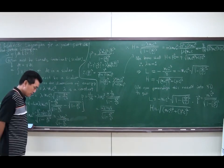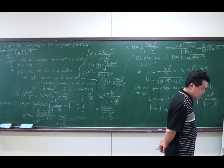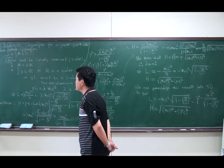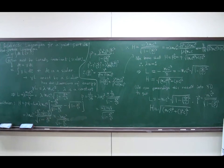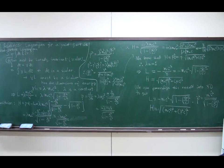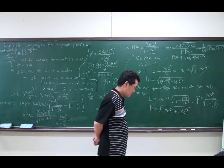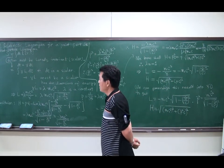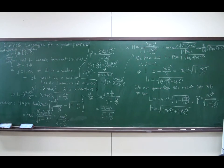Let us begin with the action principle — the least action principle. It is the fact that the physical path of the particle minimizes the action; unless the path is physical, the action becomes greater than the value evaluated along the physical path. An action in classical mechanics is a scalar, and in the relativistic case it should be a Lorentz scalar too, independent of the frame of reference. That is our starting point.